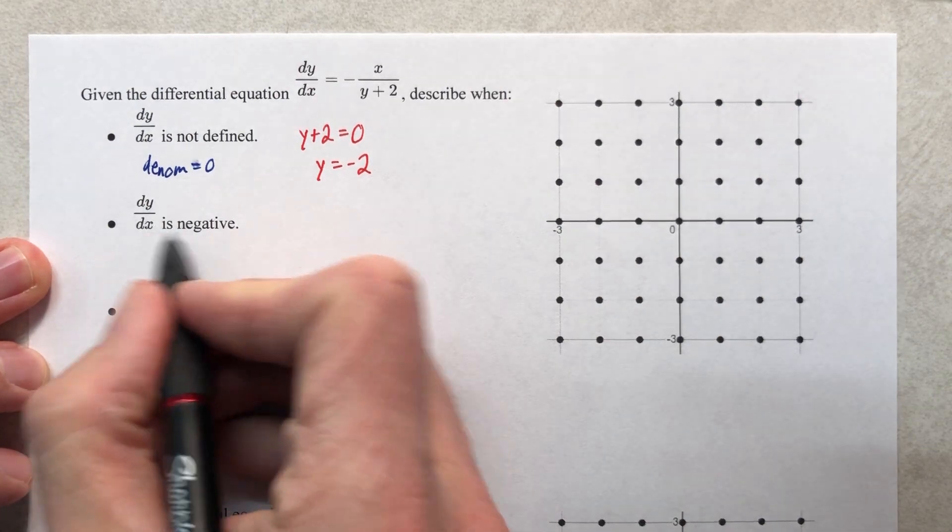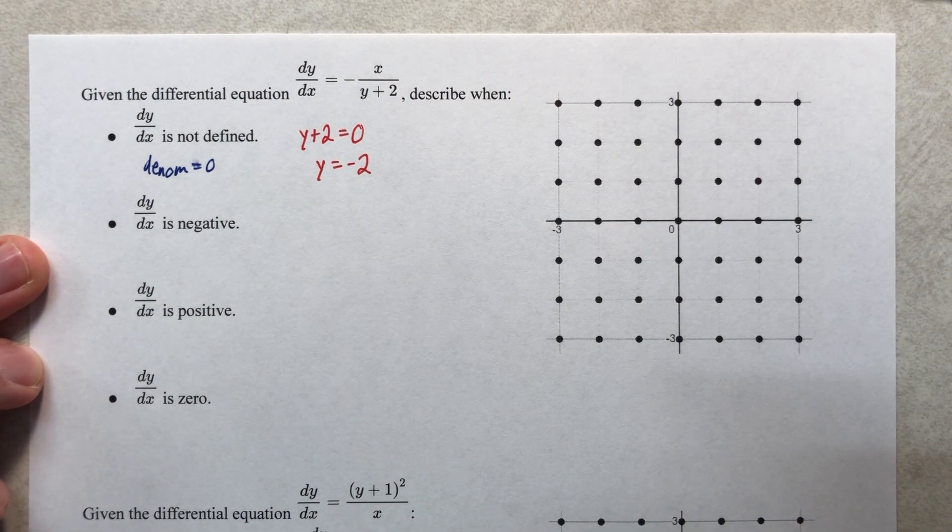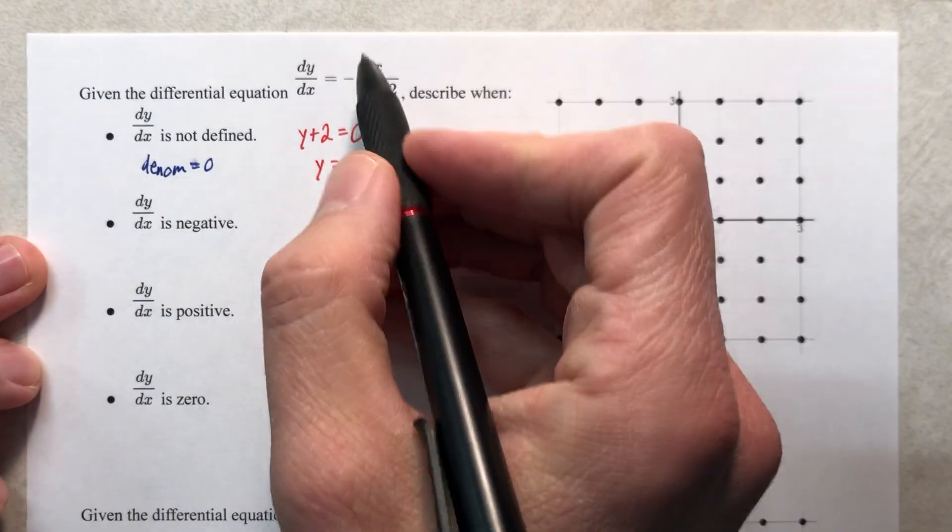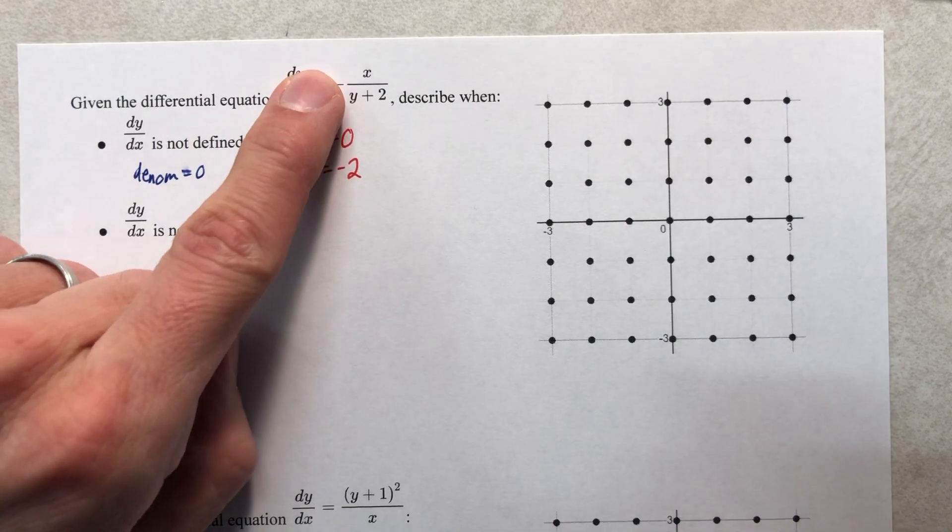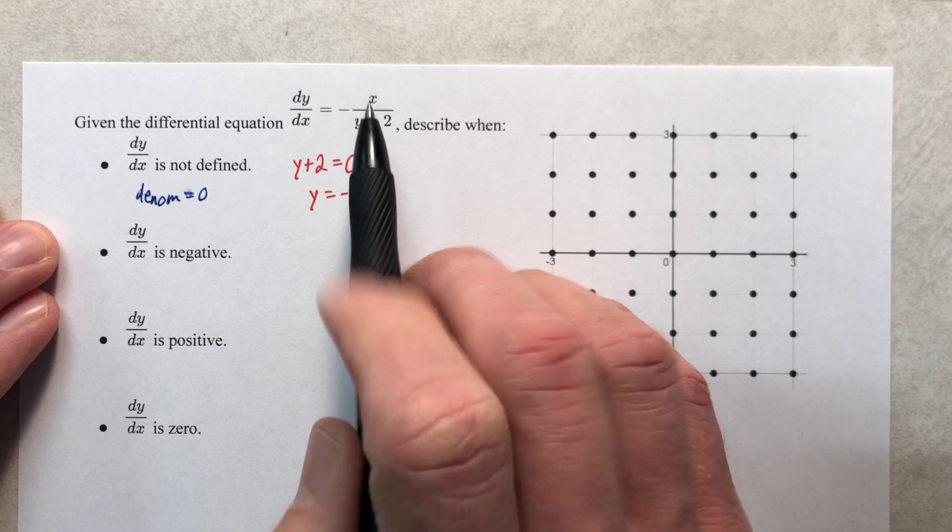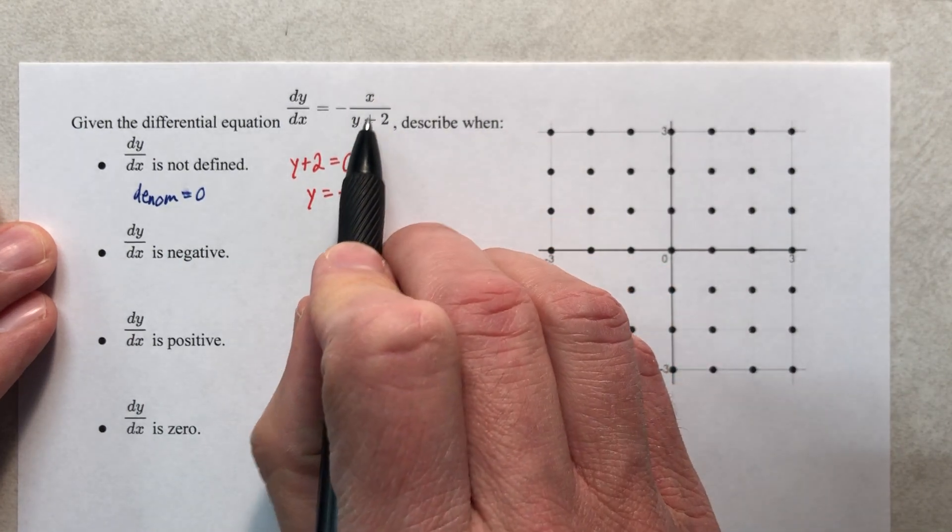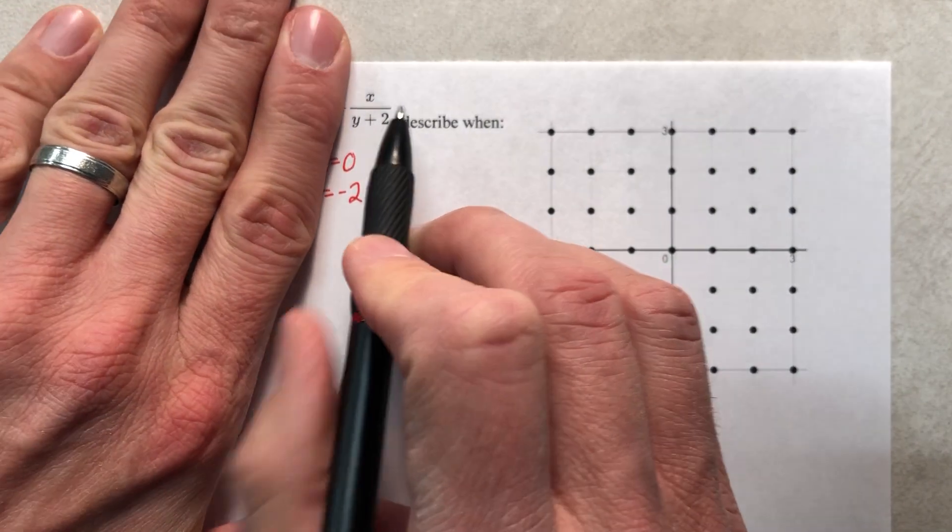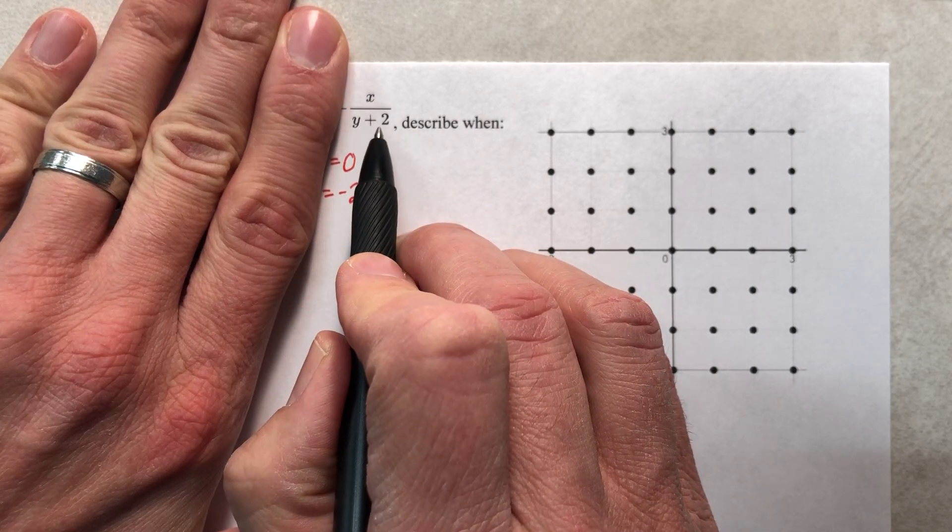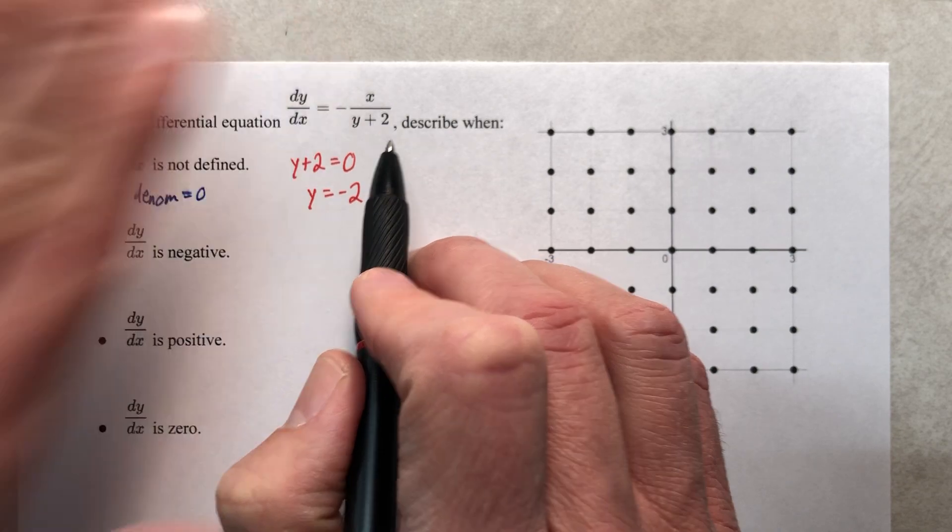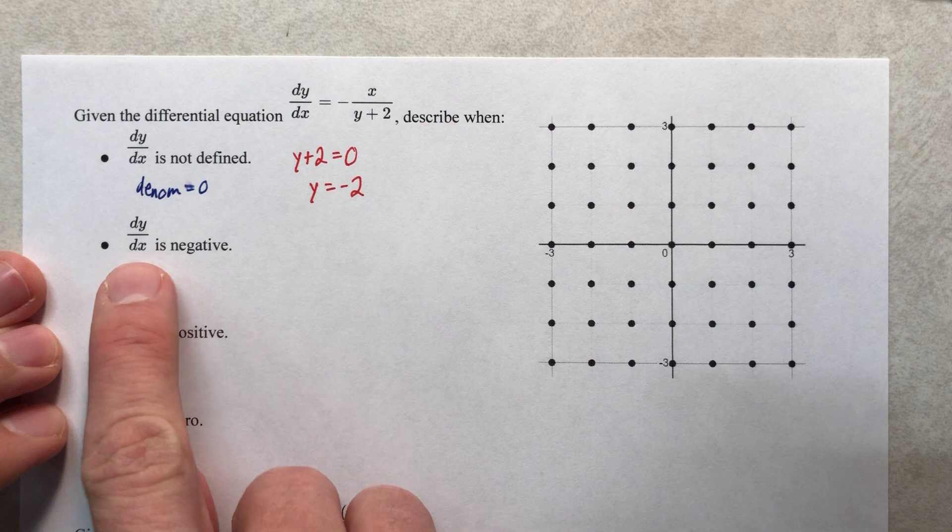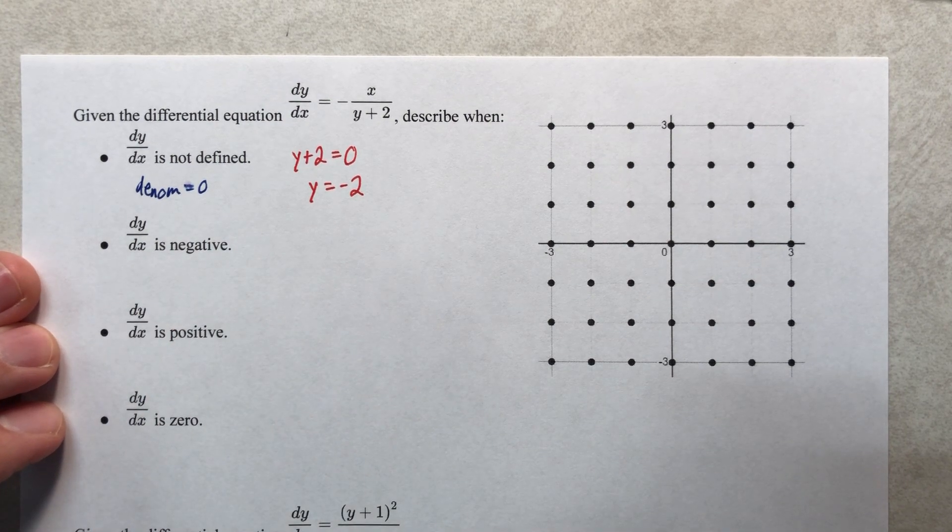I want the slope to be negative. Well, what makes a slope negative? A slope is negative if this whole thing ends up being negative. Well, it looks like it's already negative, which means the negative of this, that means that this whole fraction, not the negative, has to be positive. And therefore, the entire slope would be negative.